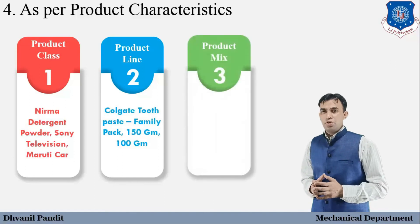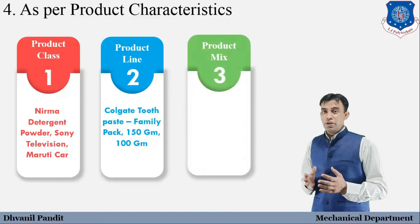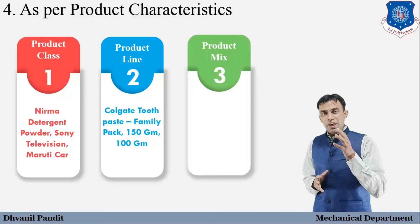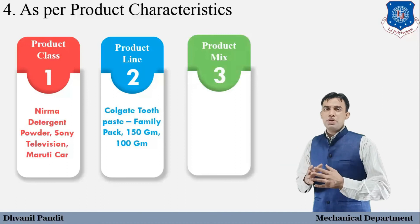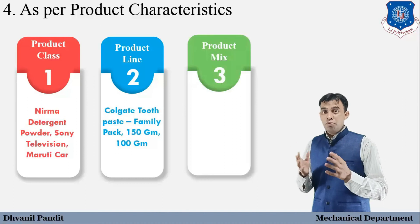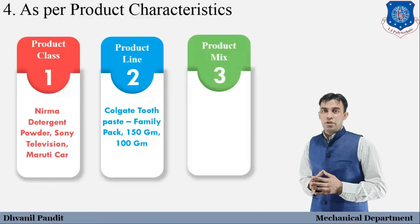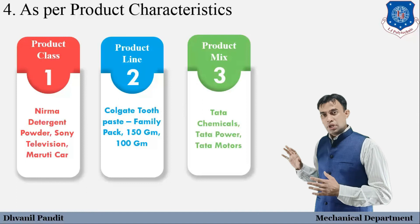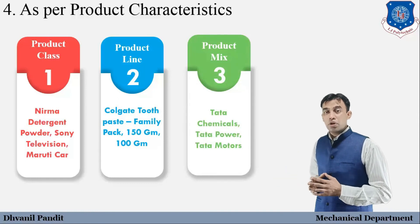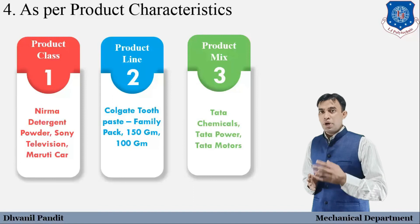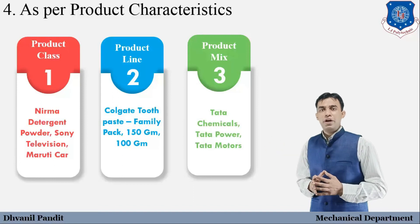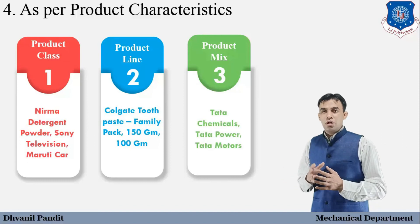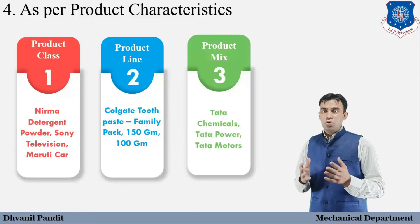The last sub-type is product mix. Here, one brand operates a diversified business and sells many different types of products. For example, the Tata brand includes Tata Chemicals, Tata Motors, Tata Steel, and Tata Power. You can see that under one brand, the business is diversified across multiple product categories. This is what we call a product mix.